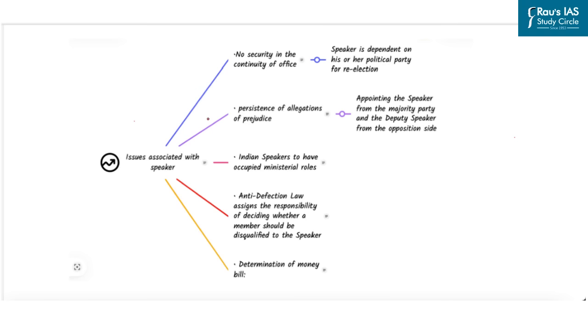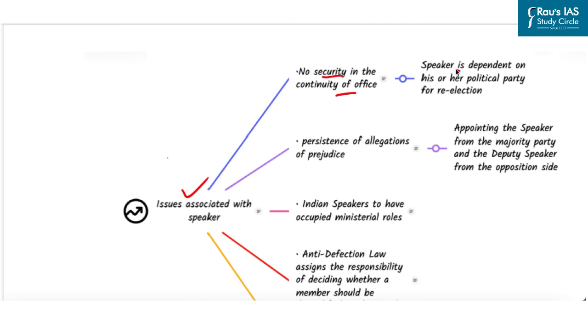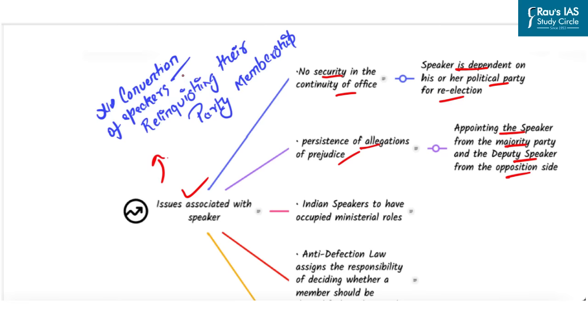Let's discuss few issues associated with Speaker. The first in this line is that there is no security in the continuity of the office. What does it mean? That Speaker is dependent on his or her political party for re-election. This makes the Speaker susceptible to pulls and pressure from her or his political party in the conduct of the proceedings of the House. Next is persistence of allegations of prejudice. As you know there has been a tradition of appointing the Speaker from the majority party and the Deputy Speaker from the opposite side, that is opposition side, which has led to structural problems. Another issue is that there is no convention of Speaker relinquishing their party membership and hence they are often perceived as being partisan.